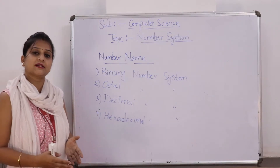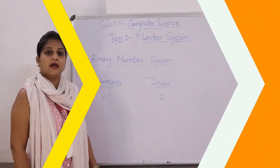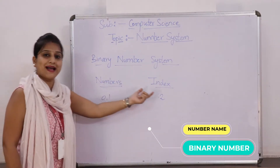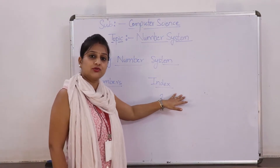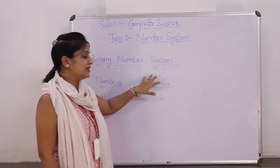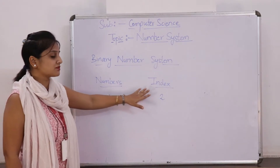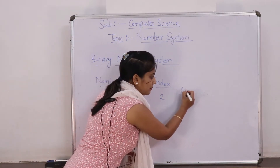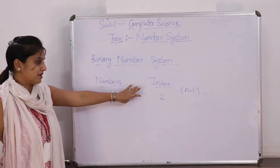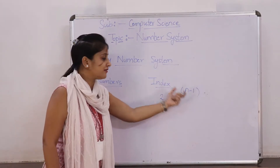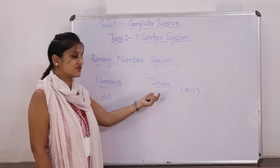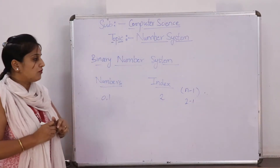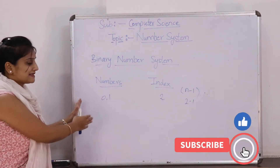We will discuss about these number systems in detail. As the name suggests, the first is the binary number system. The index number, which is also known as the base number — each number system has its own index number. The binary number system has the base number 2. We have a formula which is n-1. For binary, base is 2, so 2-1 equals 1. So the numbers in this system start from 0.